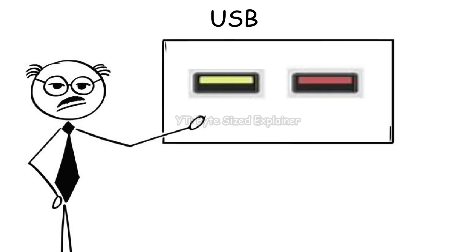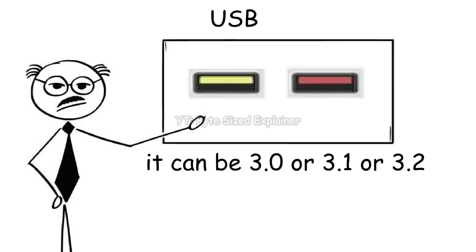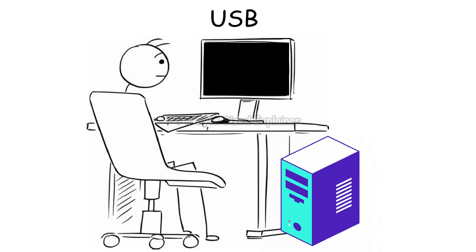By the way, some USB ports also come in yellow or red. These ports could be USB 3.0, 3.1, or even 3.2. The color only tells you about the sleep and charge feature. So if you turn off your computer and plug a cable into this sleep and charge port, you can still use it to charge your phone or gadgets.